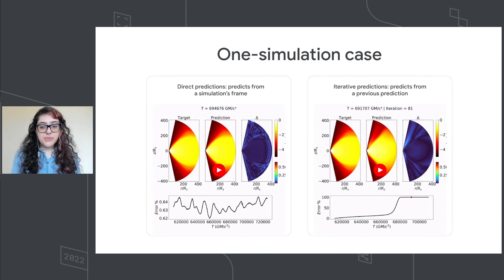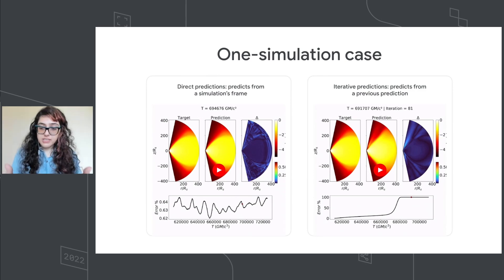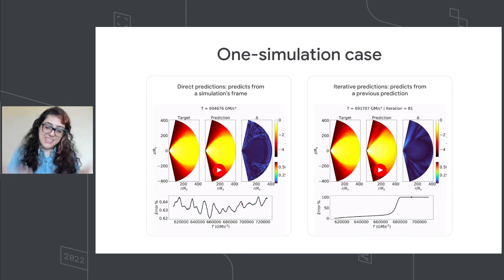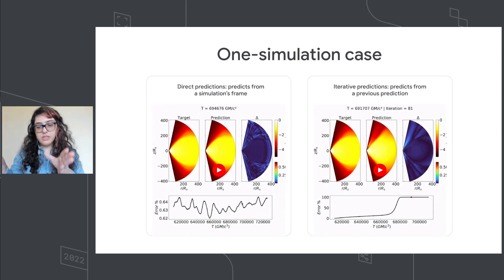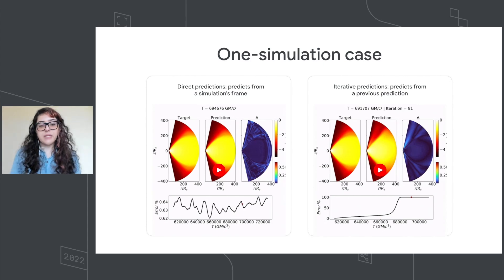For the one-simulation case, I call the first approach 'direct simulation': we have a frame, feed it to the trained model, and the model predicts the next step. We do this many times, quantifying how right or wrong the model is. In the second approach — the iterative process — we feed a frame into the model, the model simulates, then that output is fed back into the model iteratively. The model can do this very well, though we have some grid resolution problems. The next step is to feed many simulations and see if the model can handle that.